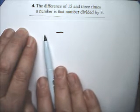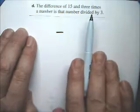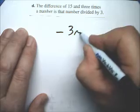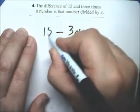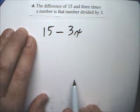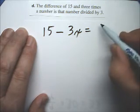Now I know that we're going to have to be subtracting two numbers. So the difference of 15 and 3 times a number. The difference of 15 and 3 times a number is that number.